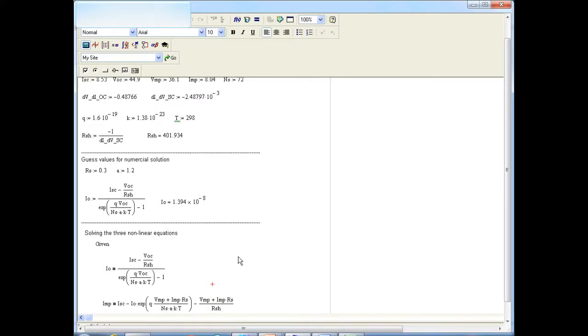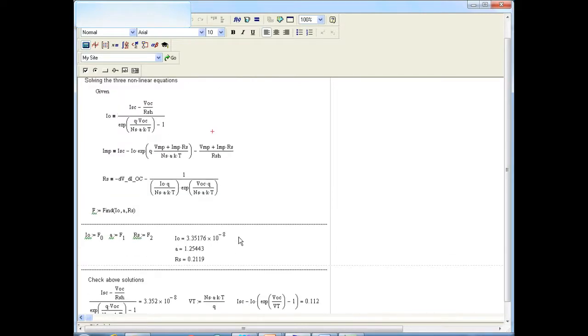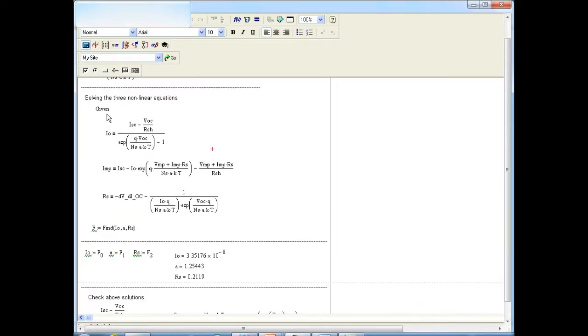And IO corresponding to A of 1.2 is this value. So that is given as a guess value, as an initial value. Then the syntax for solving the three nonlinear equations is shown here.